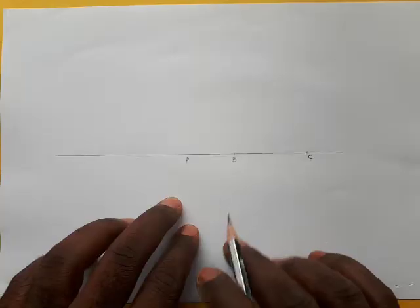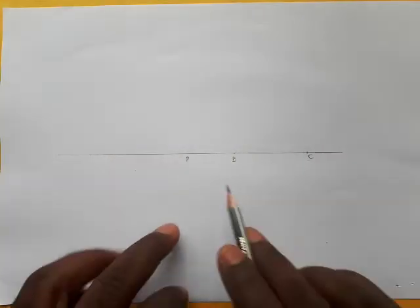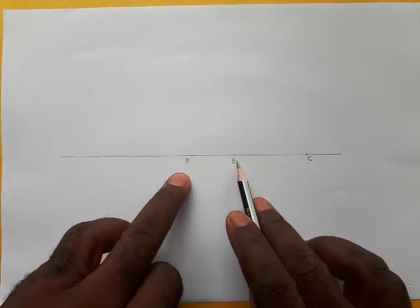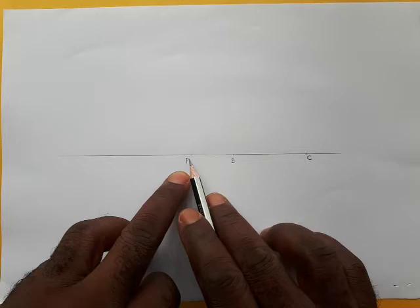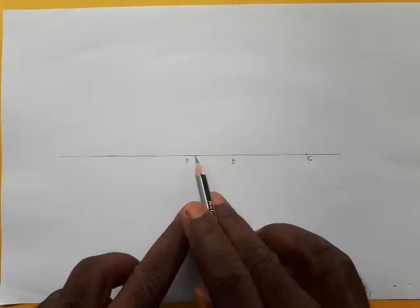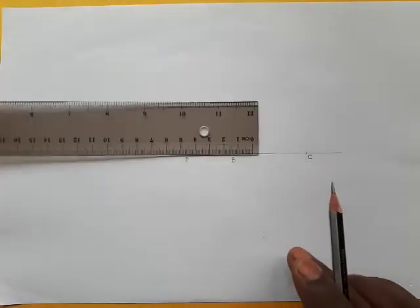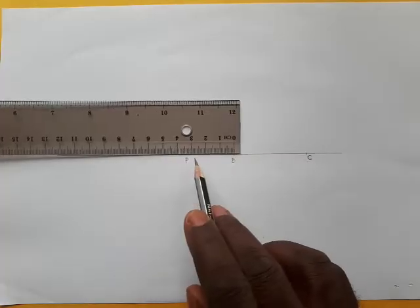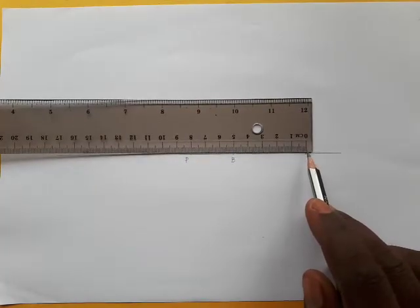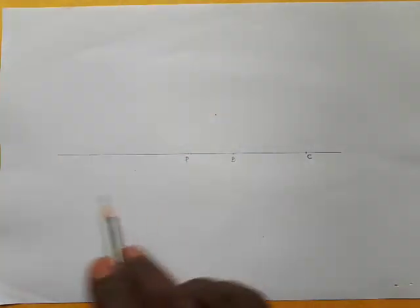You'll be given basically three parameters. You'll be given the center of the spiral, because you're actually supposed to draw a circle here. So you'll be given the center — let's call it P, otherwise known as the pole. You will be given the shortest distance PB and the longest distance PC. In this case, the shortest distance is 30 millimeters and the longest distance from center P is 80 millimeters.